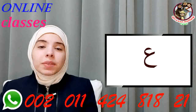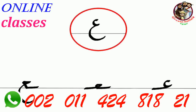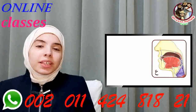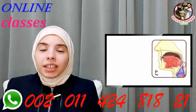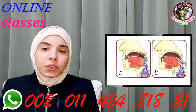Now, عين (Ain). Let's see the shapes of عين. عين is articulated from a specific point in the throat. You can start with ح because it has the same articulation point.